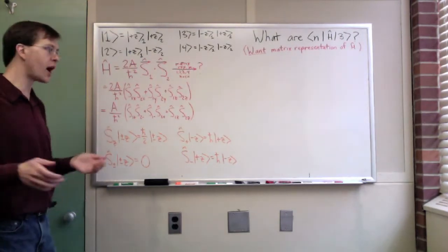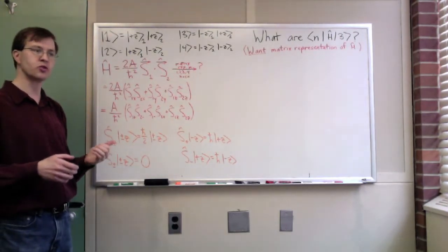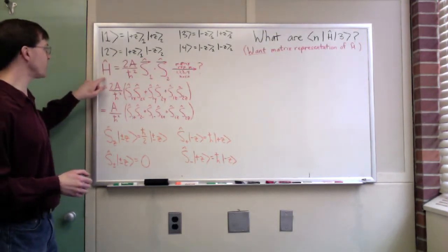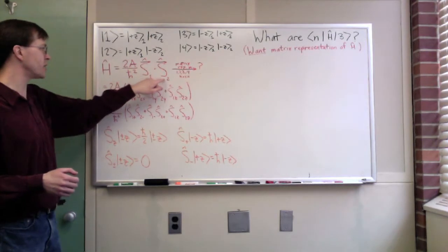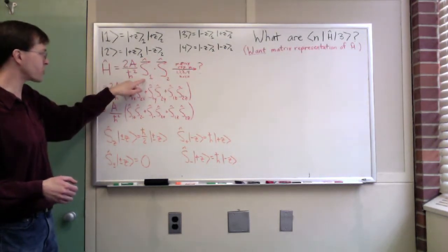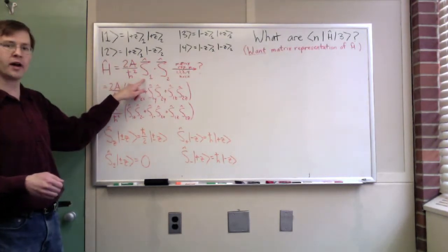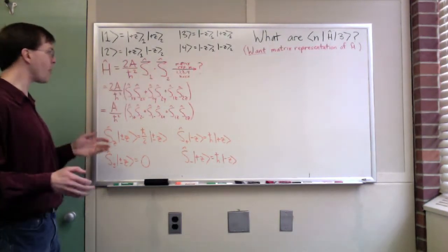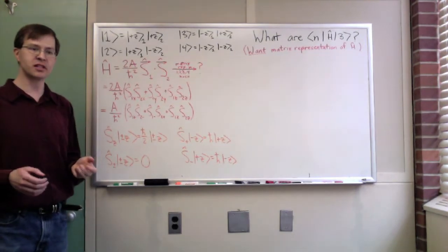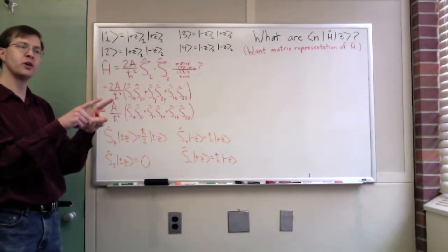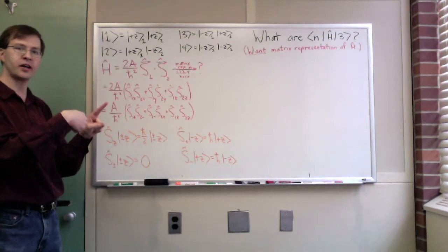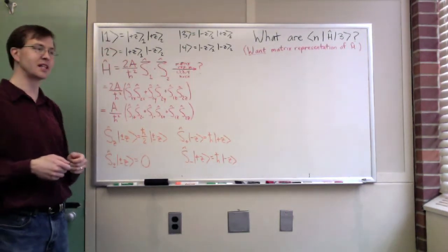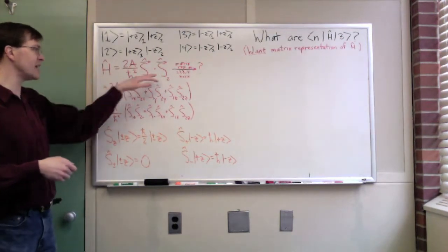If we're talking about a spin-spin interaction, here's a Hamiltonian we can write down. This is a Hamiltonian that's proportional to the product of the two spins: the spin vector operator for particle one dot product with the spin vector operator for particle two. That means if the two are pointing the same direction, we'll get a positive value. If they're pointing opposite directions, we'll get a negative value.